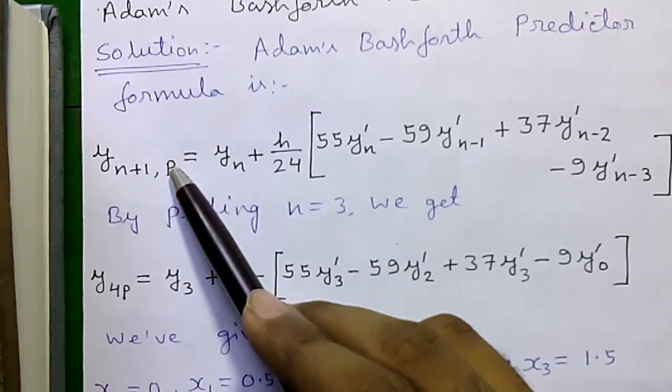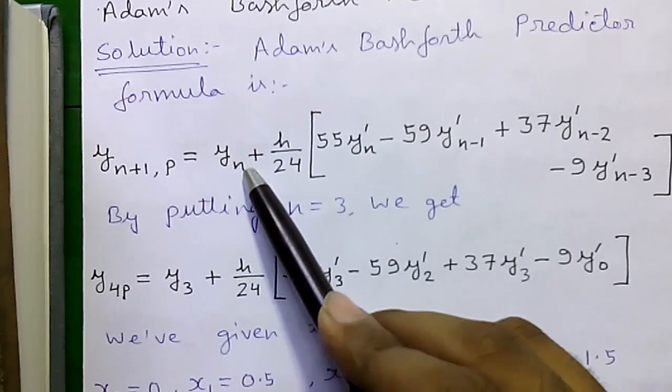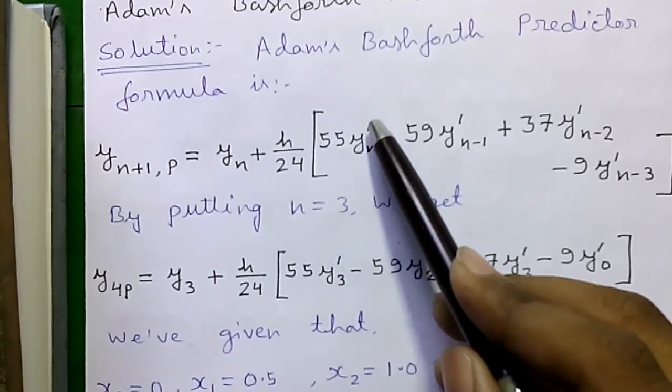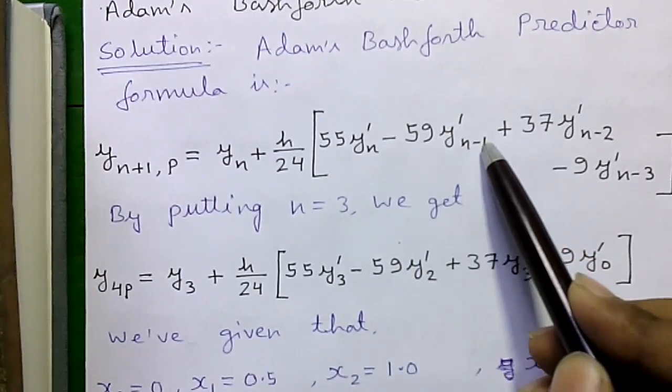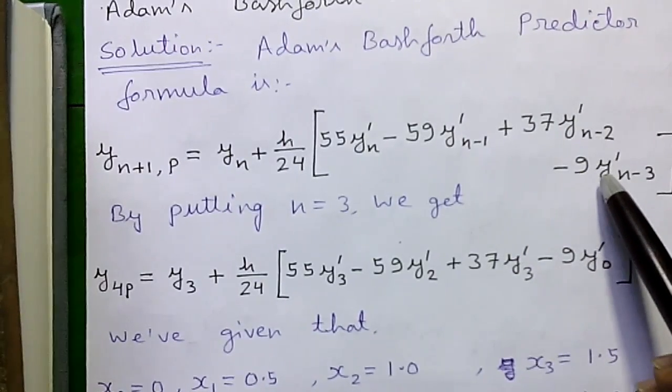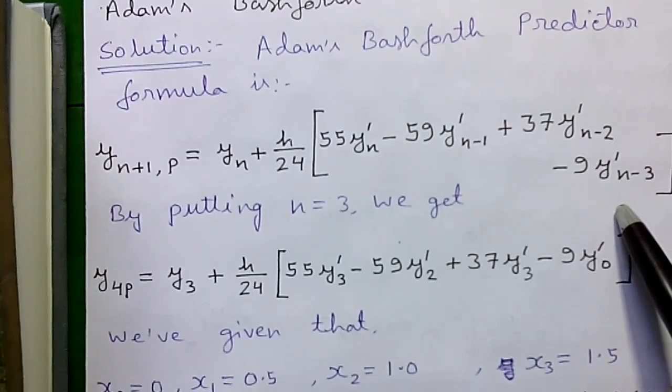y n plus 1 comma p equals to y n plus h divided by 24 into 55 y dash n minus 59 y dash n minus 1 plus 37 y dash n minus 2 minus 9 y dash n minus 3.